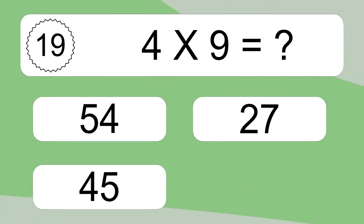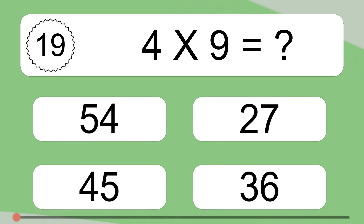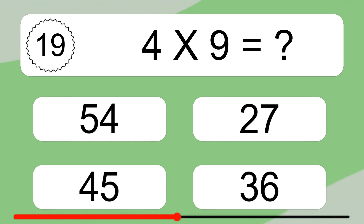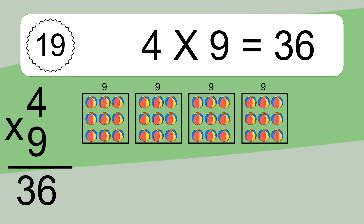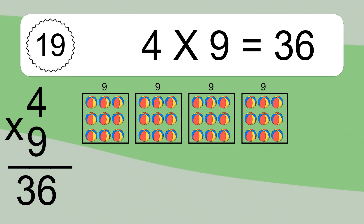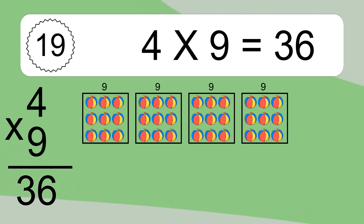4 times 9 equals what? 4 times 9 equals 36. We have 4 boxes, and each box has 9 colorful balls inside. If you count all the balls in all the boxes together, you will have 4 times 9 balls. This equals 36 balls.